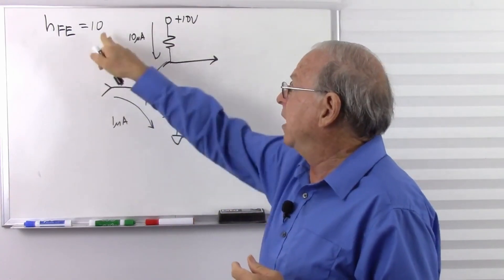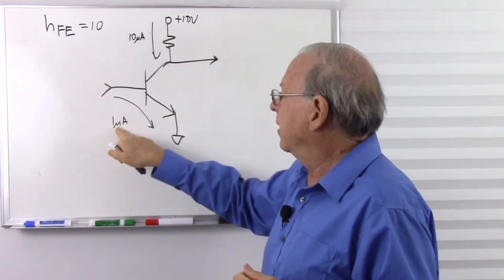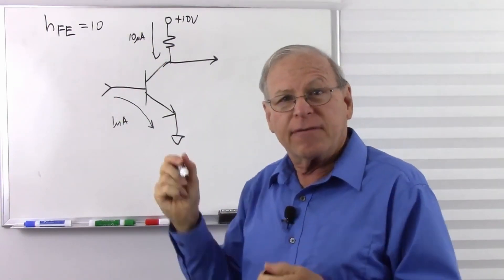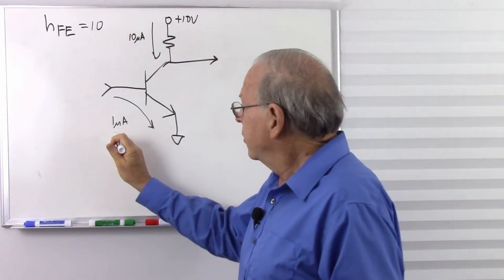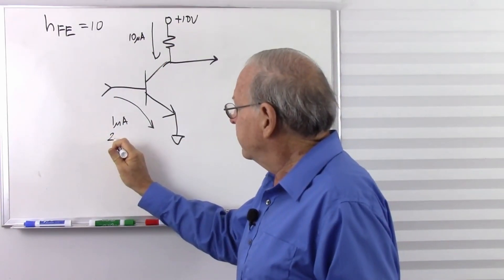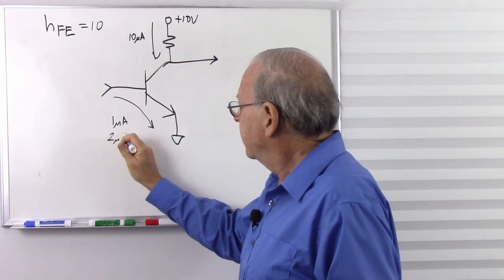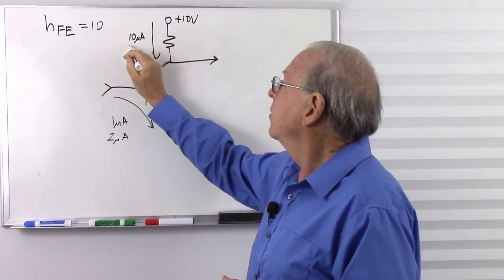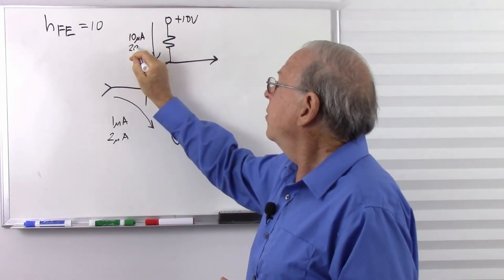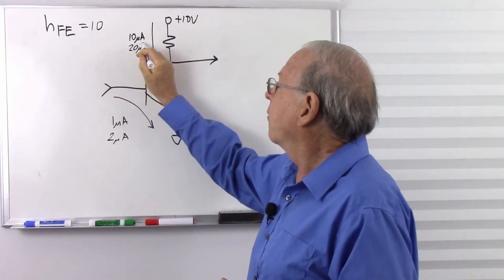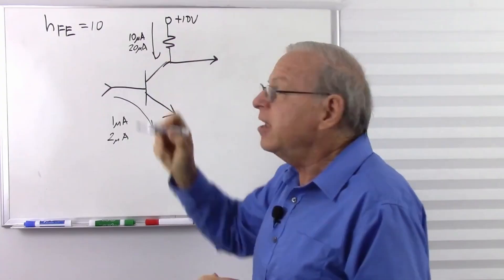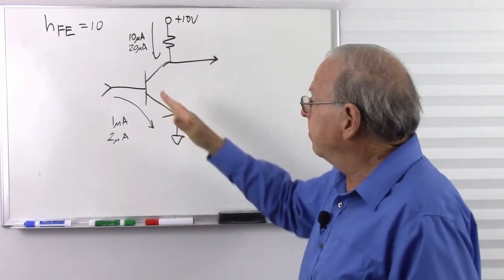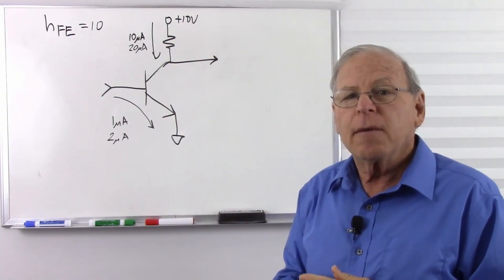With an HFE of 10, I put in 1 microamp, I get 10 microamps. If I put in 2 microamps, I'm going to get 20 microamps. It's a very convenient relationship between the base current and the collector current.